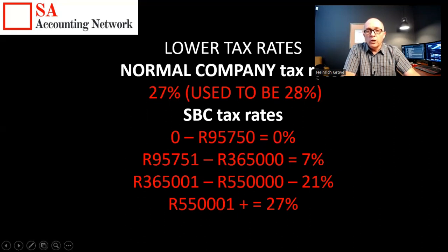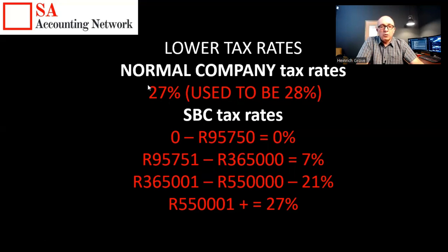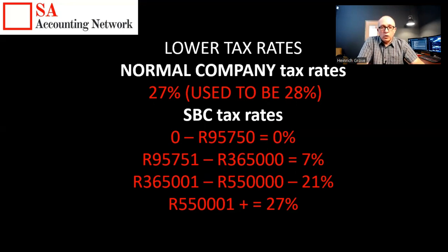For a normal small business, your company tax rate just came down from 28%, and at the moment it is 27%. But if you use Small Business Corporation tax rates, the first R95,000 of your profit you pay 0% tax. Then from R95,000 to R365,000 you only pay 7% tax. Then from R365,000 to R550,000 you pay 21% tax. Only from R550,000 upward do you start paying at 27%.